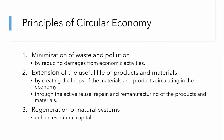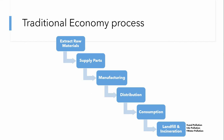Let us understand how circular economy can do all of these things, but before that let's understand what the traditional economy process looks like so we can compare it with circular economy. In a traditional economy process, we extract materials, then create parts, supply these parts to manufacturing firms, which distribute them, and eventually they are used by consumers in the consumption process.